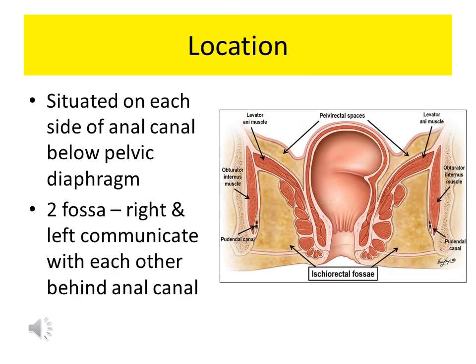Coming to the location of ischioanal fossa. As you can see in this diagram, the rectum is at the center, containing the anal canal. It is situated on either side of the anal canal, below the pelvic diaphragm. There are two fossae — one on the right and another on the left — and they communicate with each other behind the anal canal.